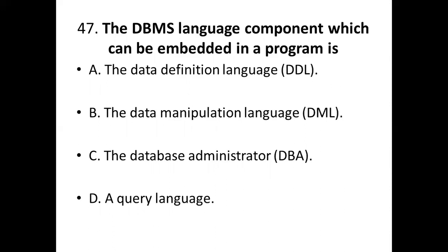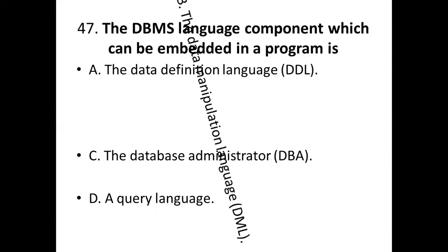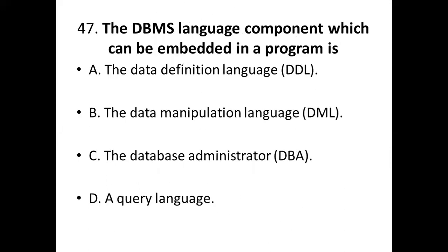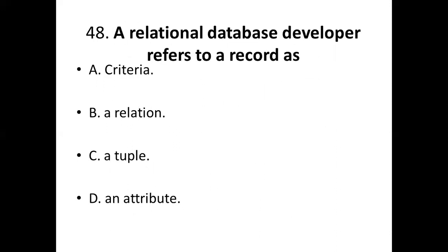47th bit: The DBMS language component which can be embedded in a program is dash. Option A: the data definition language, DDL. Option B: the data manipulation language, DML. Option C: the database administrator, DBA. Option D: a query language. 48th bit: The database developer refers to a record as dash. Option A: criteria. Option B: a relation. Option C: a table. Option D: an attribute. Answer — Option C: a table.